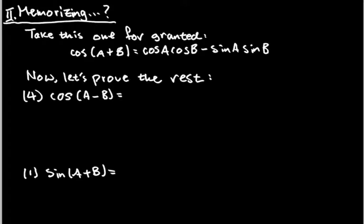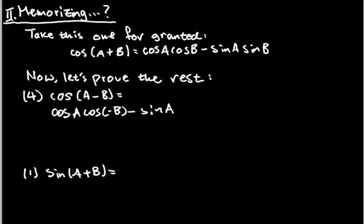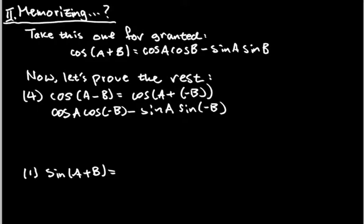If cosine of (a + b) equals cosine of the first angle times cosine of the second angle minus sine of the first angle times sine of the second angle, then we can apply that here. Note that cosine of (a − b) is the same as cosine of (a + (−b)), so the first angle is a and the second angle is negative b, and we can use that identity directly.